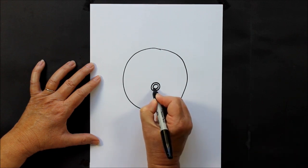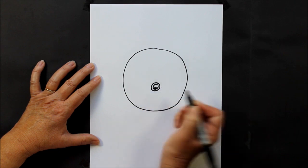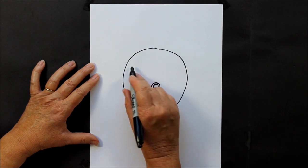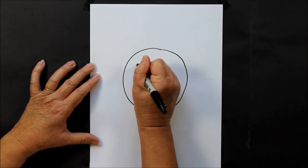Then at the bottom of that smaller circle, you're going to put a little area down here. That's going to be his tongue. All right, then we're going to do his eyes.